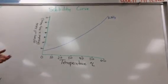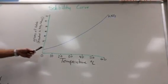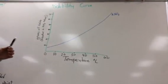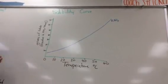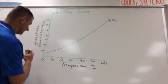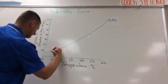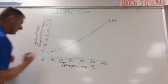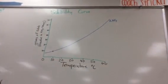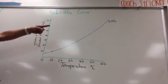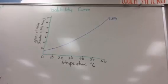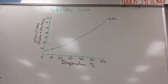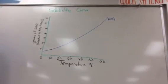Now, how do you read this? You can say anywhere where it hits the line, it's saturated. So if it hits the line, it's saturated. So we can say at 10 degrees Celsius, 10 grams hits the line. So you can say that KNO3 is saturated at 10 grams at 10 degrees Celsius. So if it's a point on the line, then it's saturated.